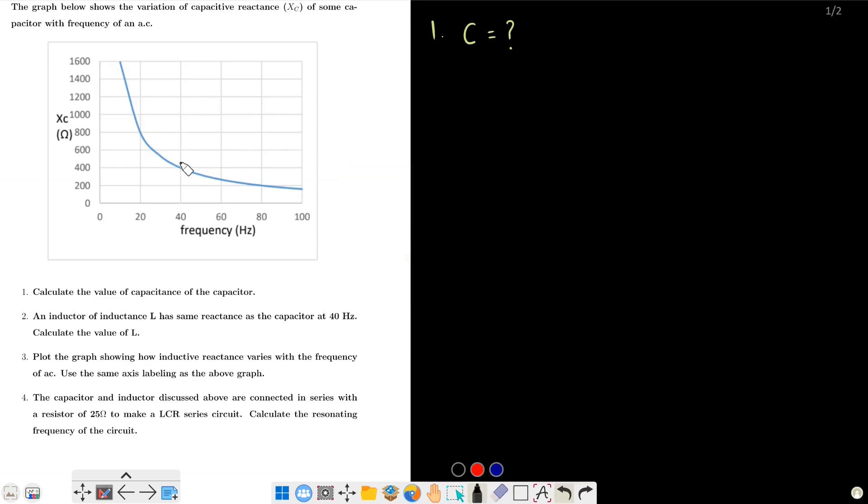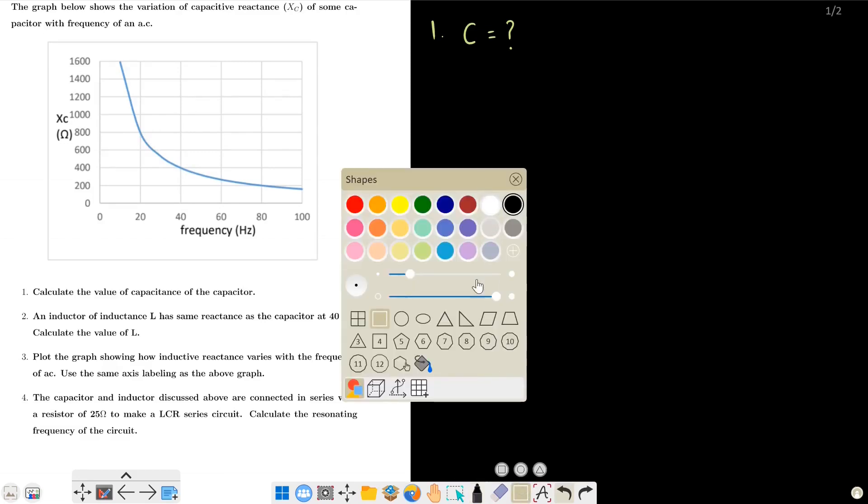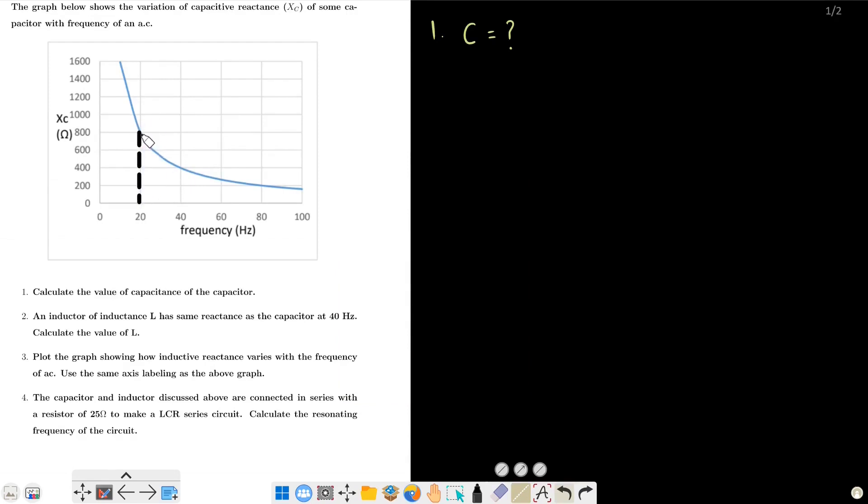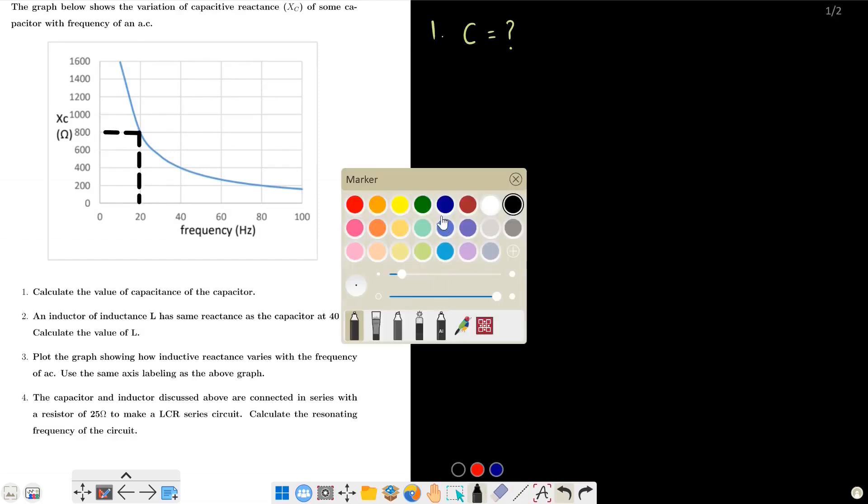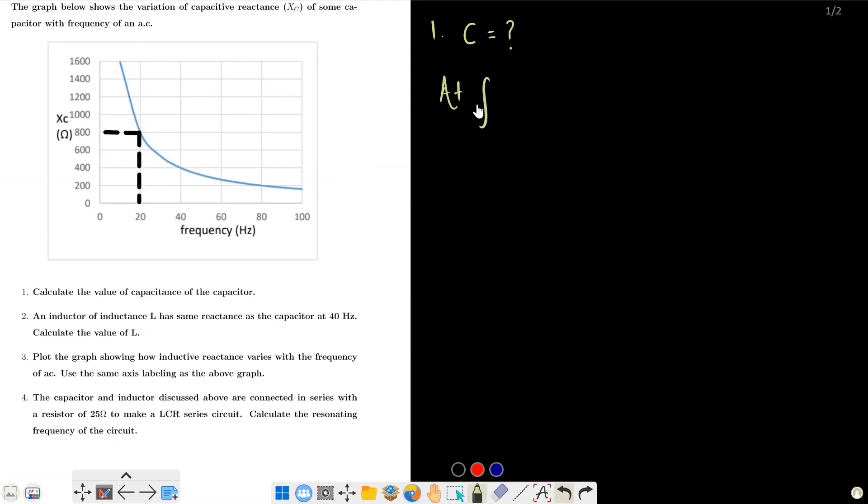From the graph, capacitive reactance has a value of 1500 ohms. At F equals 40 Hz, X_C equals 800 ohms. Using X_C equals 1 over omega C, or X_C equals 1 over 2 pi F C, we can calculate C. So C equals 1 divided by 2 pi F into 800.